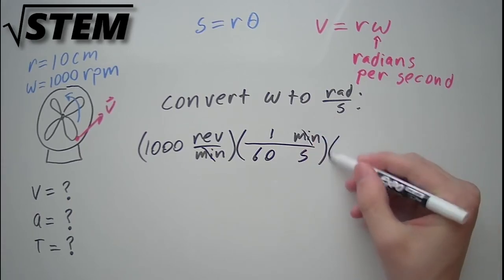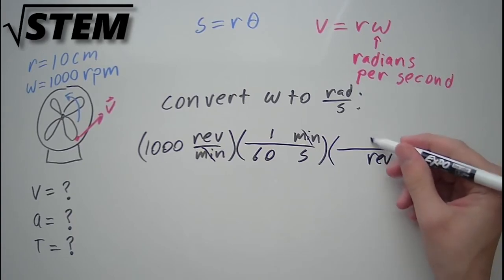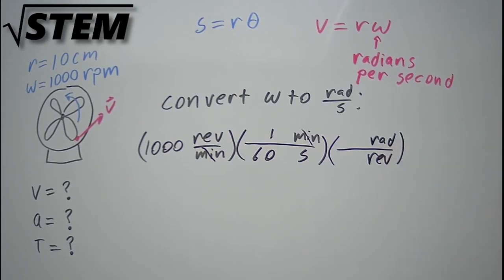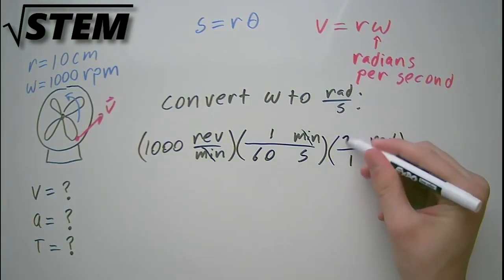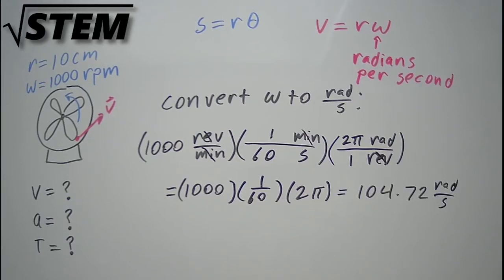But now we need to get radians. So if we have revolutions on the bottom, and radians on the top, we know that in one revolution there are 2 pi radians. So if we multiply all of these out, they will come out to 104.72 radians per second.